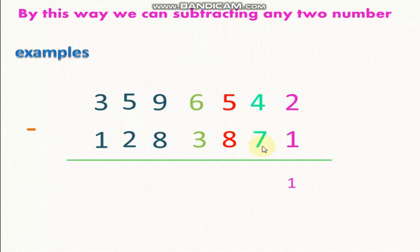4 minus 7. I can't take 7 from 4, so 4 asks 5 to give it 1. We will take 1 from 5, and 5 became number 4, and 4 became 14. 14 minus 7 equals 7.